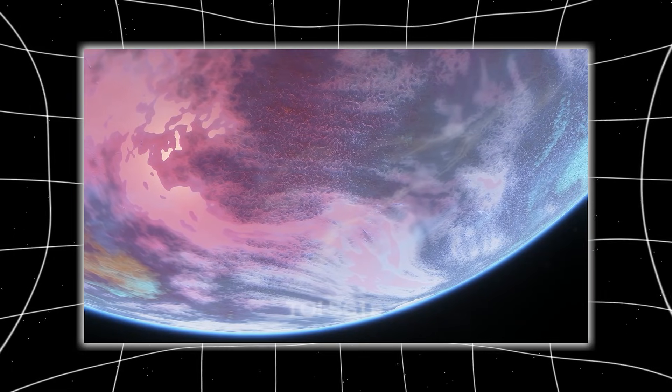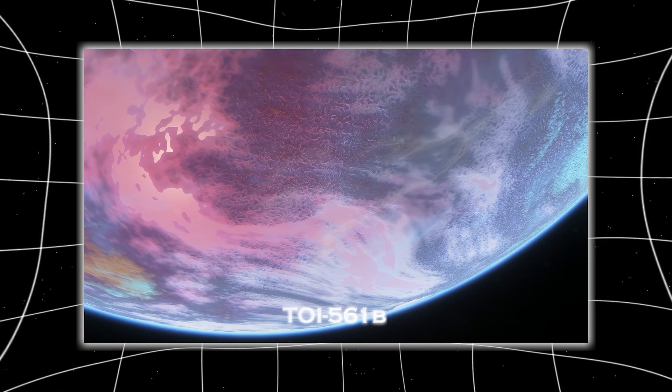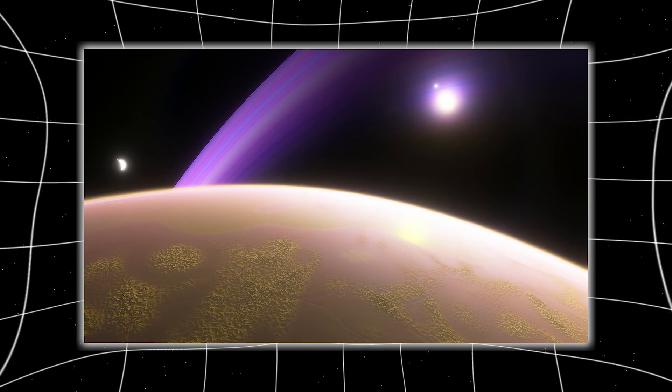It also detected a dense atmosphere around TOI 561b, a super-Earth orbiting extremely close to its star. According to previous models, such a planet should have lost its atmosphere long ago.